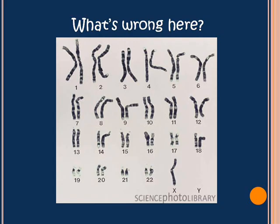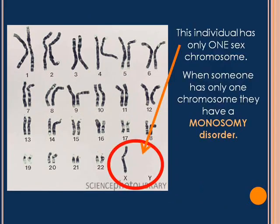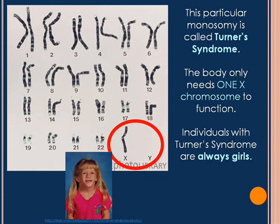Now take a look at this one. This one's a little bit harder. This individual has only one sex chromosome. When someone only has one chromosome, we call it a monosomy — mono is the prefix for one. This particular monosomy is called Turner syndrome. The body only really needs one X chromosome to do most of life's functions, so individuals with Turner syndrome are always girls and are generally healthy, though they have some issues with their physical appearance.